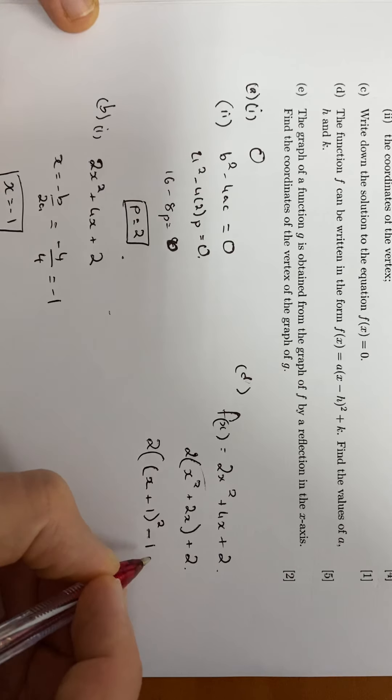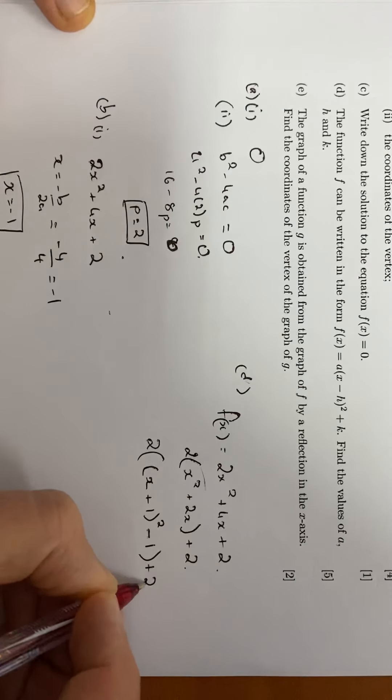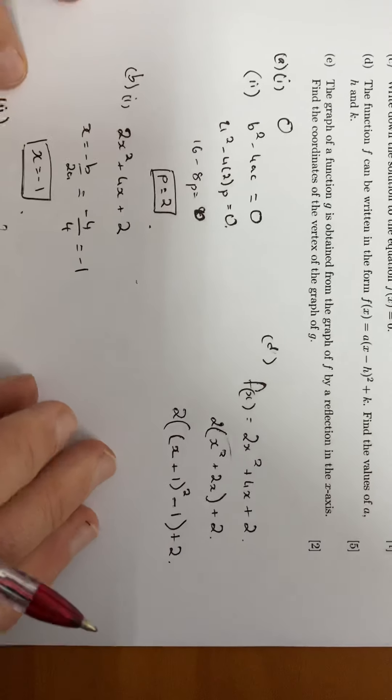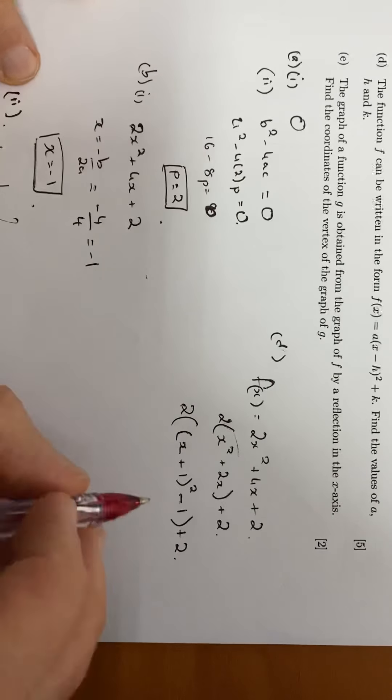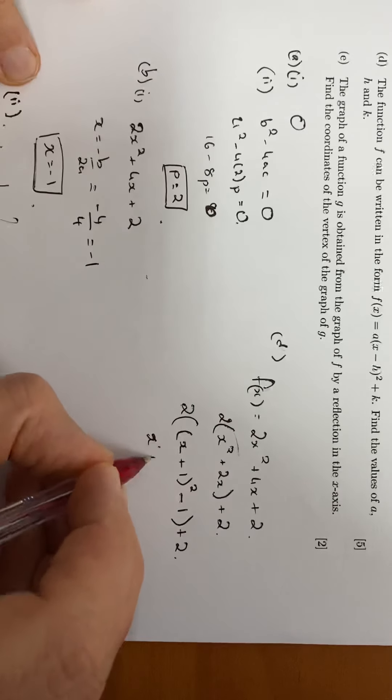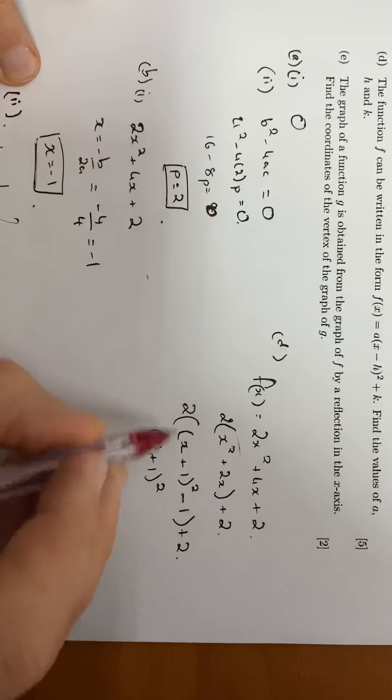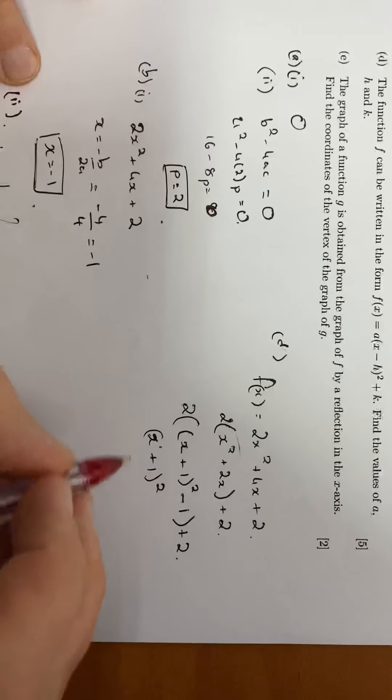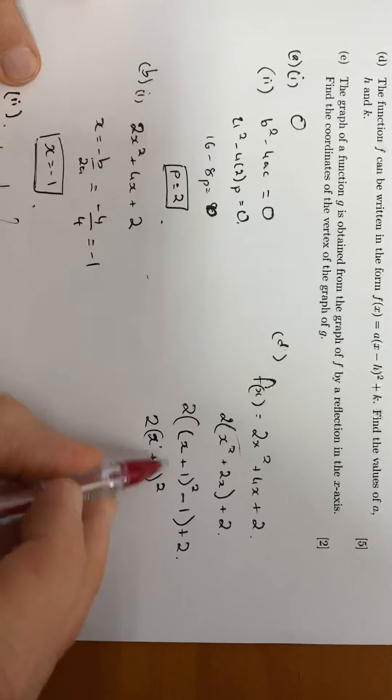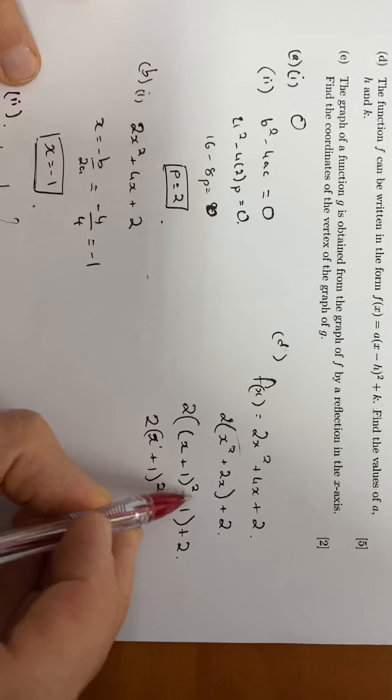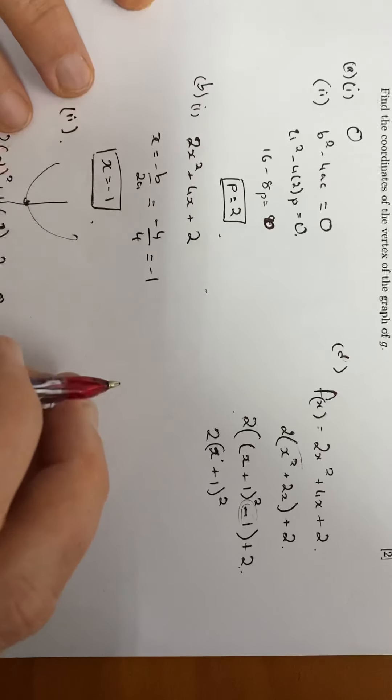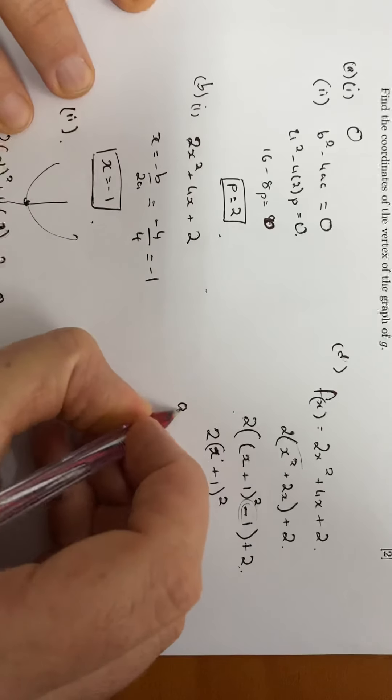If you're unsure about completing the square, you need to go back and review that. So that's going to be x plus 1 squared. That 2 is going to be, sorry, 2x plus 1 squared minus 2 times 2, add 2. That's gone. So what's my a, h, and k?